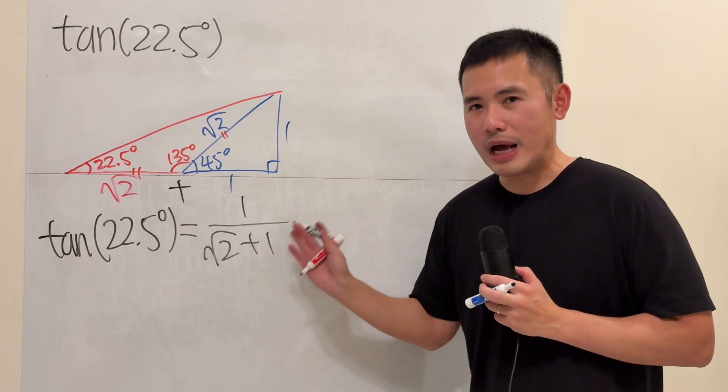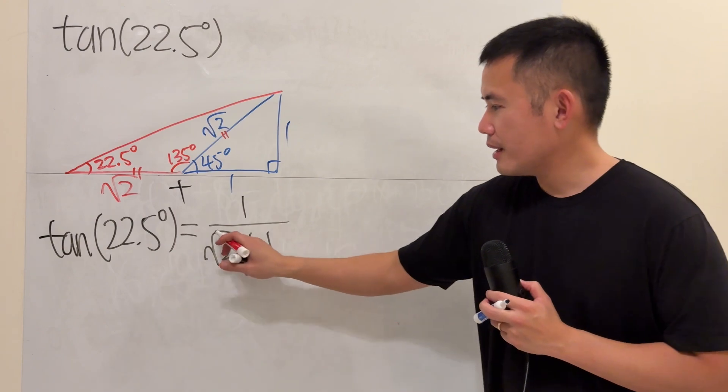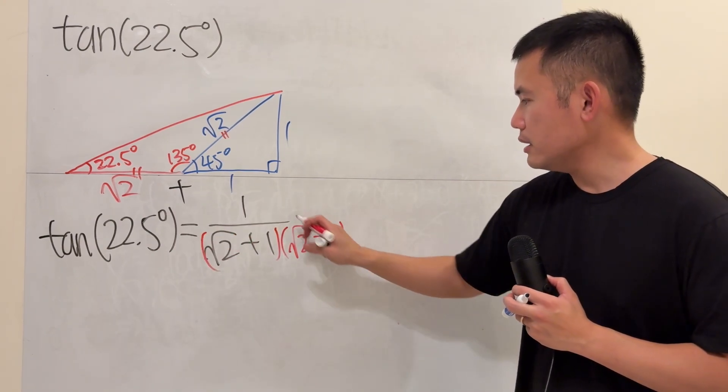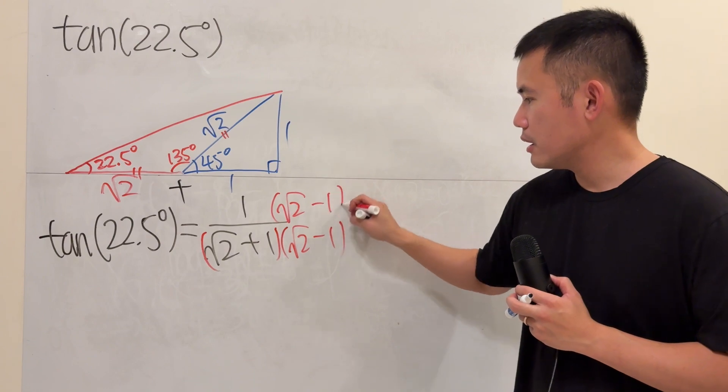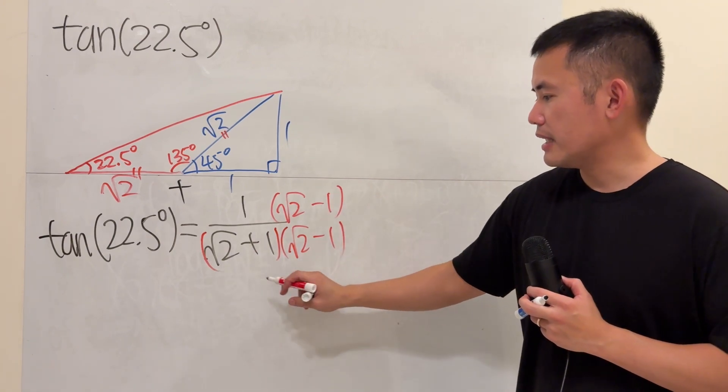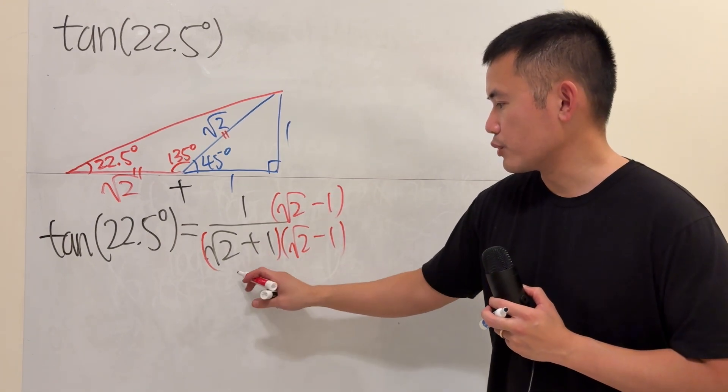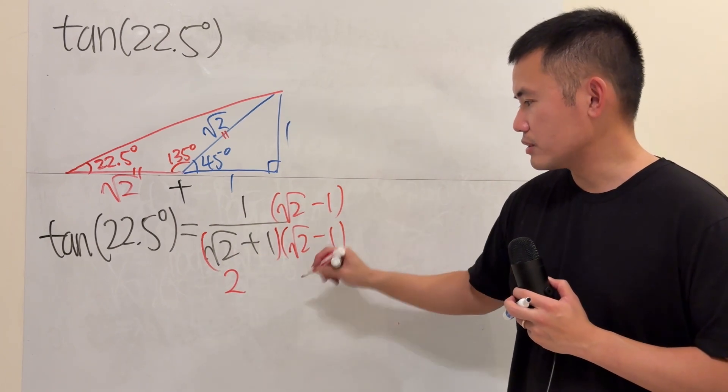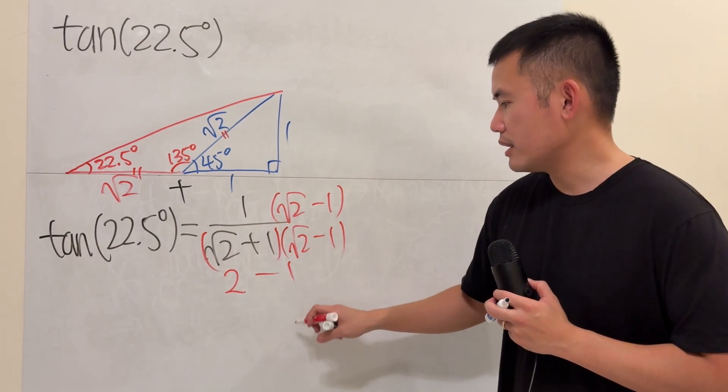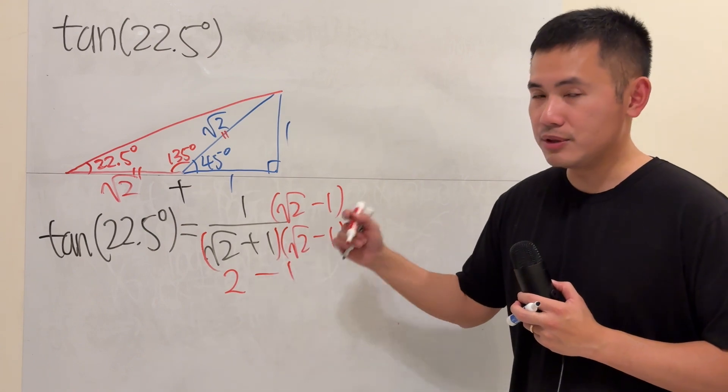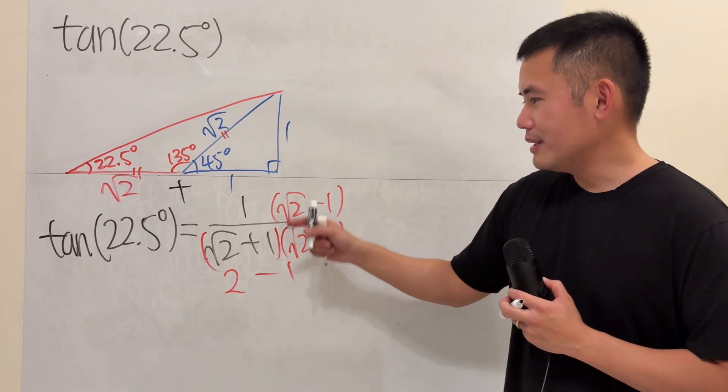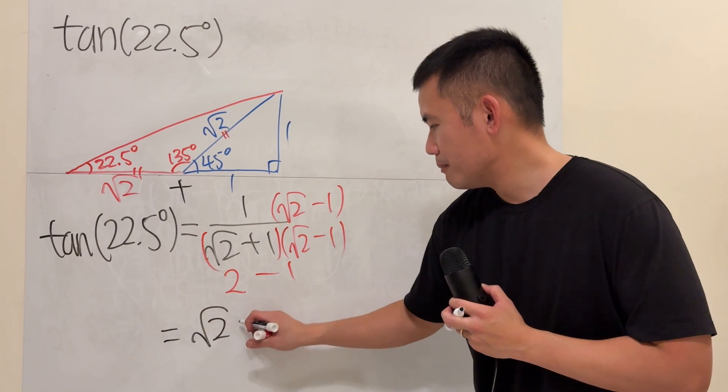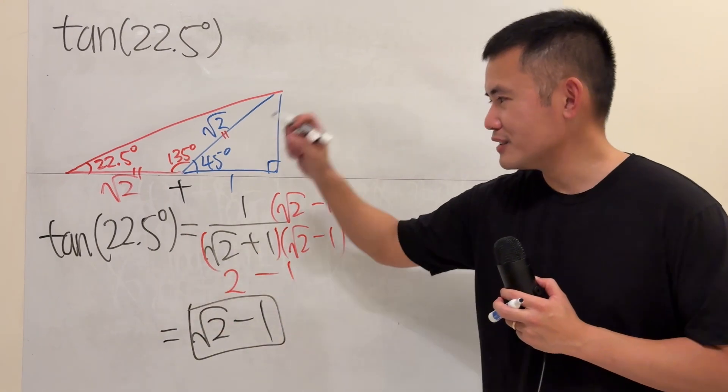But as usual, let's rationalize the denominator. Multiply the conjugate, which is square root of 2 minus 1. Now, if you multiply this and that, it's just square root of 2 times square root of 2, which is just 2. This times that, this times that, just cancel, and this times that, just minus 1. So the base, the bottom, is just 1. So, in fact, all this is just equal to square root of 2 minus 1. And then we are done. So nice, isn't it? Yeah.